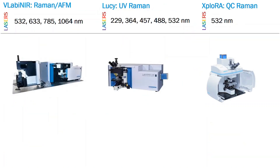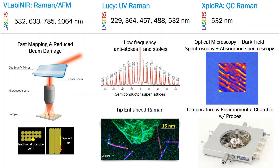Here at Penn State, we have a number of Raman systems and laser choices to select from, as well as a wide range of functionality capable on most of these tools. We have DuoScan, which allows us to reduce beam damage, we can scan low frequency, and we can do co-localized AFM Raman as well as tip-enhanced Raman. We can overlay any number of optical microscopy techniques with the Raman image or Raman spectra, and we have in-house temperature and environmental chamber in-situ capabilities as well.